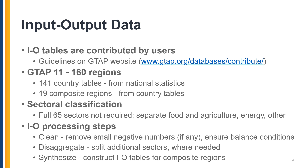In terms of sectoral classification, while GTAP 11 has 65 sectors for each of the represented countries and composite regions, when input-output tables are contributed to GTAP it is not required that they contain all sectoral detail. There are some selected sectoral splits that are required to be present, such as food and agriculture, energy, and other sectors like manufacturing and services, but not all sectoral details need to match the fully disaggregated 65 sector level.